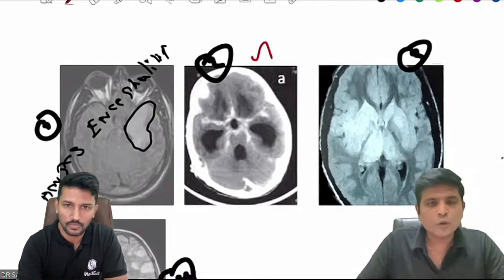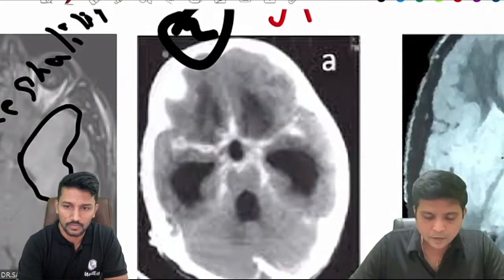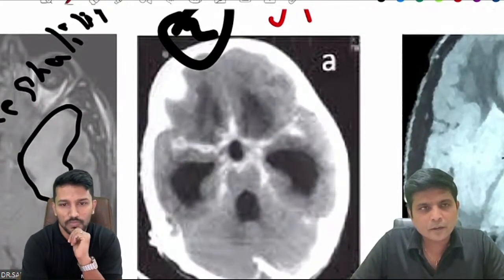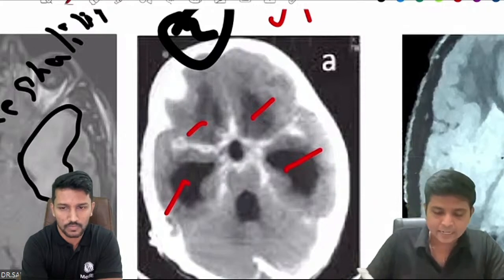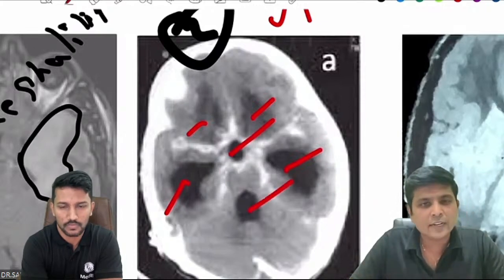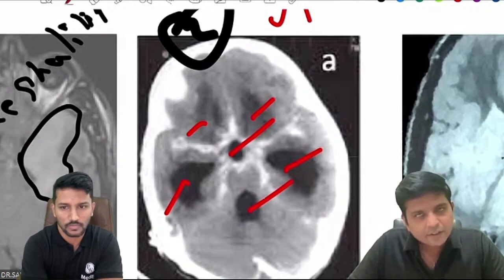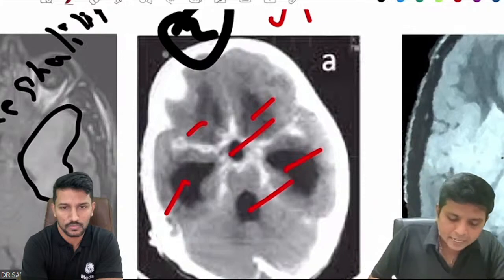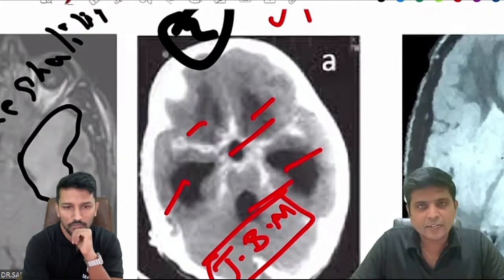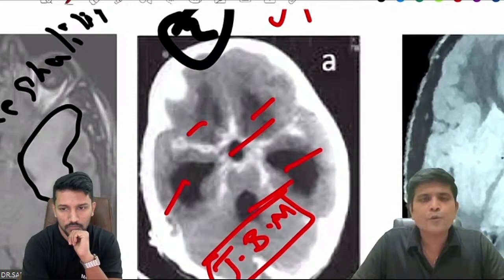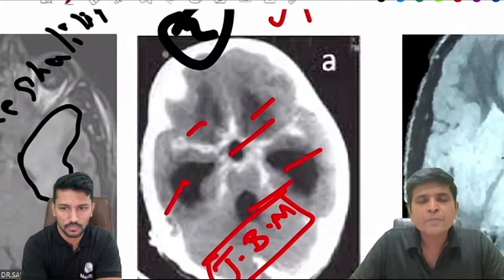In imaging 2, the lateral ventricle is dilated, the third ventricle is dilated, and the fourth ventricle is also dilated — tetrahydrocephalus. Whenever you see any case of meningitis along with tetrahydrocephalus or hydrocephalus, unless otherwise proved, you are dealing with a case of tuberculous meningitis. Any child with fever, seizures, and MRI revealing hydrocephalus — particularly tetrahydrocephalus — think in terms of tuberculous meningitis.